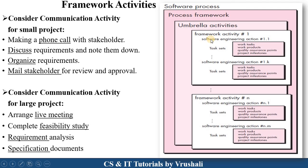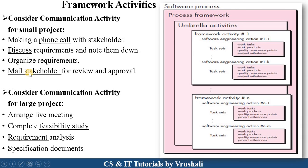Now the next topic is framework activities. We discussed process framework activities and umbrella activities. Each process framework activity has a particular task set. For example, for a communication activity in a small project, the task sets are: first, make a phone call with the stakeholders; then discuss requirements with the customers; write down all those requirements; organize all those requirements; and finally mail these requirements to each and every stakeholder — whether customer, tester, developer, or analyst.